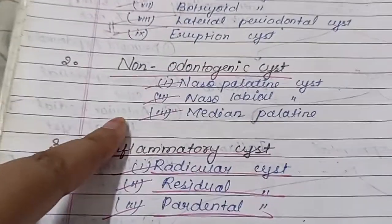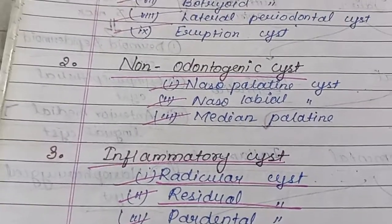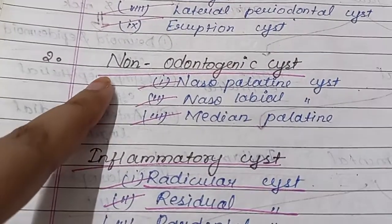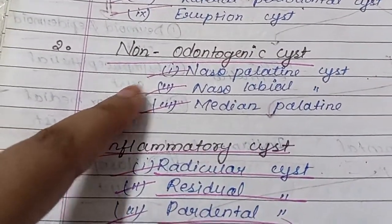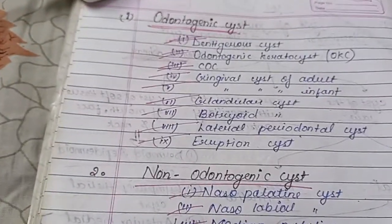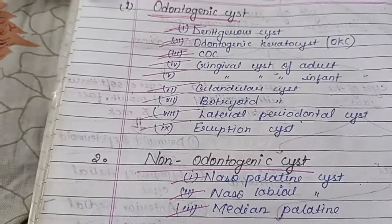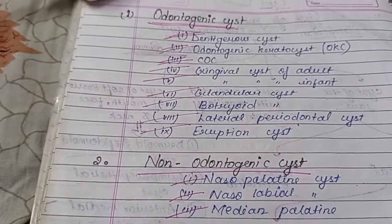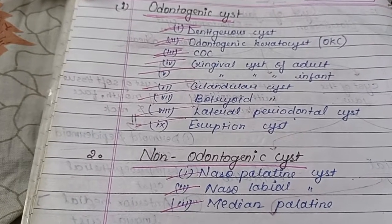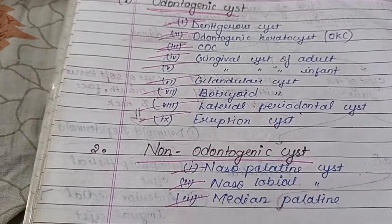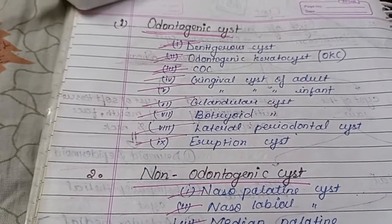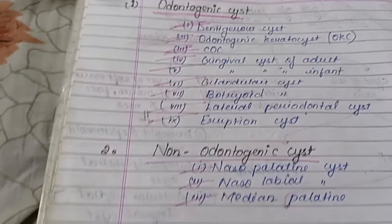Now, non-odontogenic cysts include nasopalatine cysts, nasolabial cysts, and medial palatine cysts. These two main categories — odontogenic cysts and non-odontogenic cysts — are the most important topics to understand clearly.